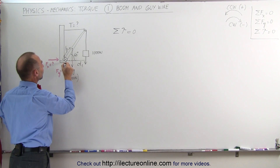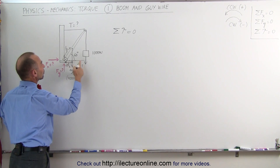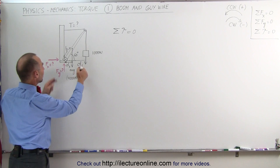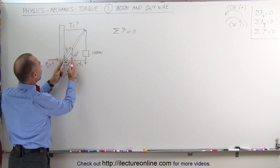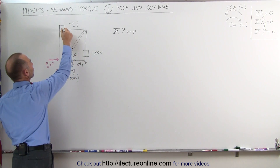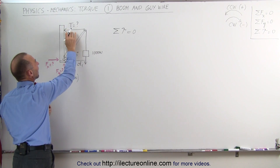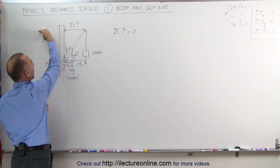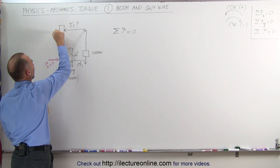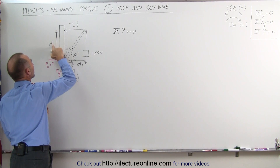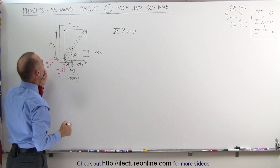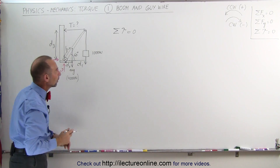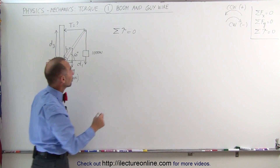So we can say that distance is D2, which is one-third the distance from the pivot to the edge. D1 is the full distance from the pivot to the end of the boom, and D2 is one-third of that. The third force is the tension in the guy wire, which is holding the boom and keeping it from collapsing. The line of action of that force gives us distance D3 relative to the pivot point. Now we're ready to add up all the torques.